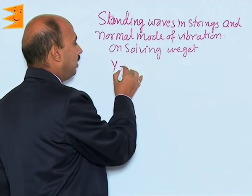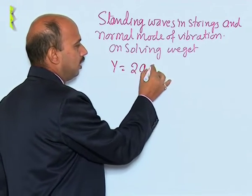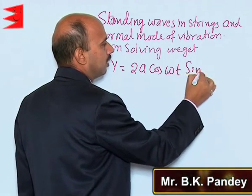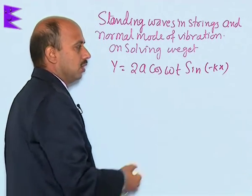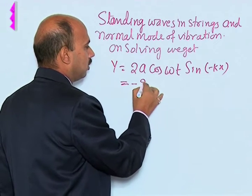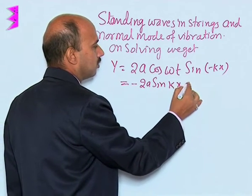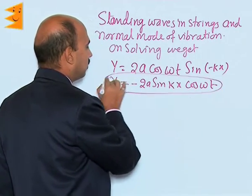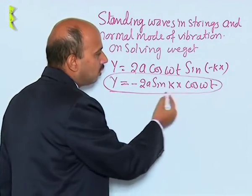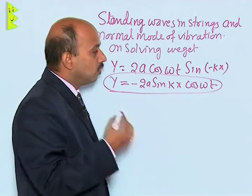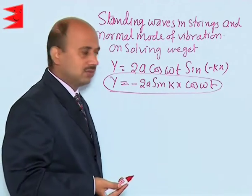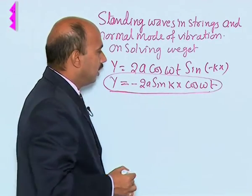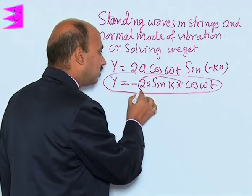On solving, we get y is equal to 2a cos(omega t) and sin minus kx, then we can write minus 2a sin(kx) cos(omega t). This is the equation for a standing wave. This is not similar to a progressive wave, which was sin(omega t minus kx) — it is not in that form. This equation represents a standing wave, and this part is taken as the amplitude.